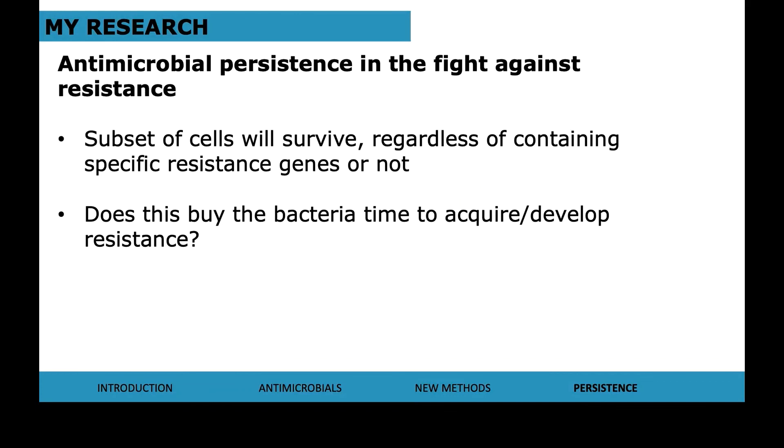This may ultimately link in with antibiotic resistance research in that these are a subset of cells that are going to survive regardless of containing specific resistance genes or not. There are certain questions leading to, does having this underlying ability to survive come what may buy the bacteria time to then acquire or develop resistance against antibiotics in the future? For example, if you have a large colony, you get initially knocked with antibiotics, but you manage to survive. Does that buy you more time to acquire a successful mutation that's going to enable you to survive the next round of antibiotic treatment? Some research does indicate this may be the case, but other pieces of research maybe not so much. So again, another emerging part of research in this field.